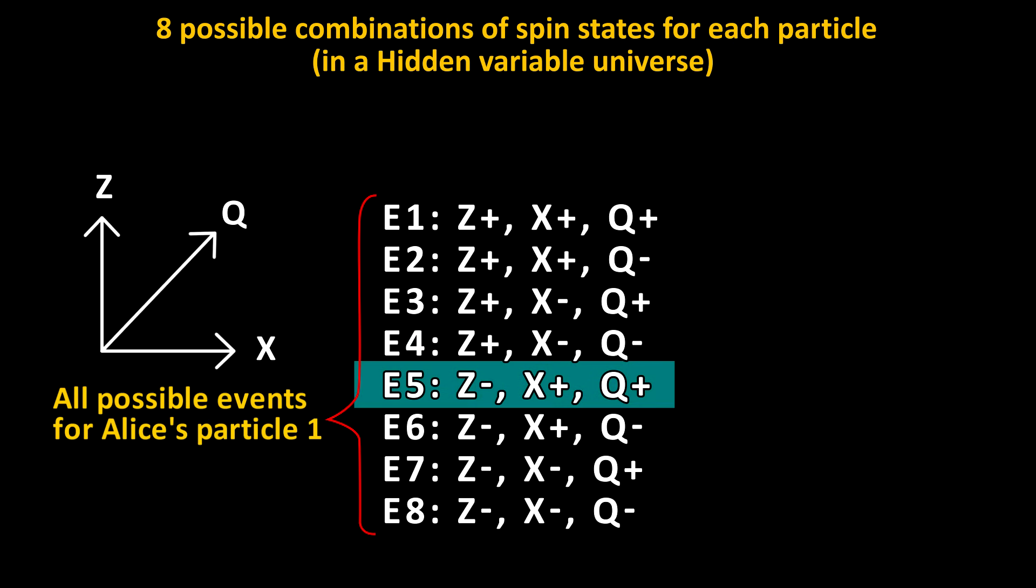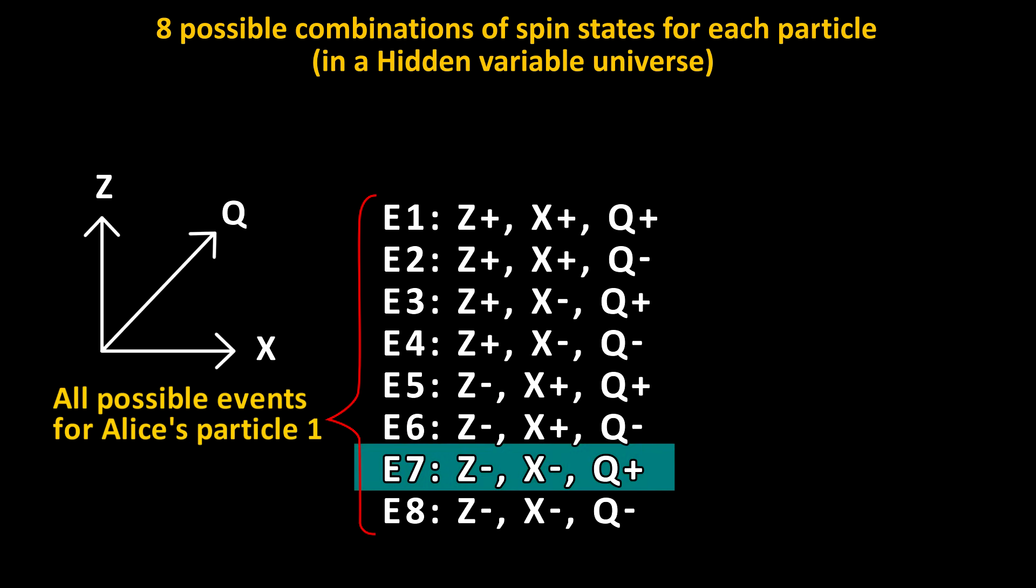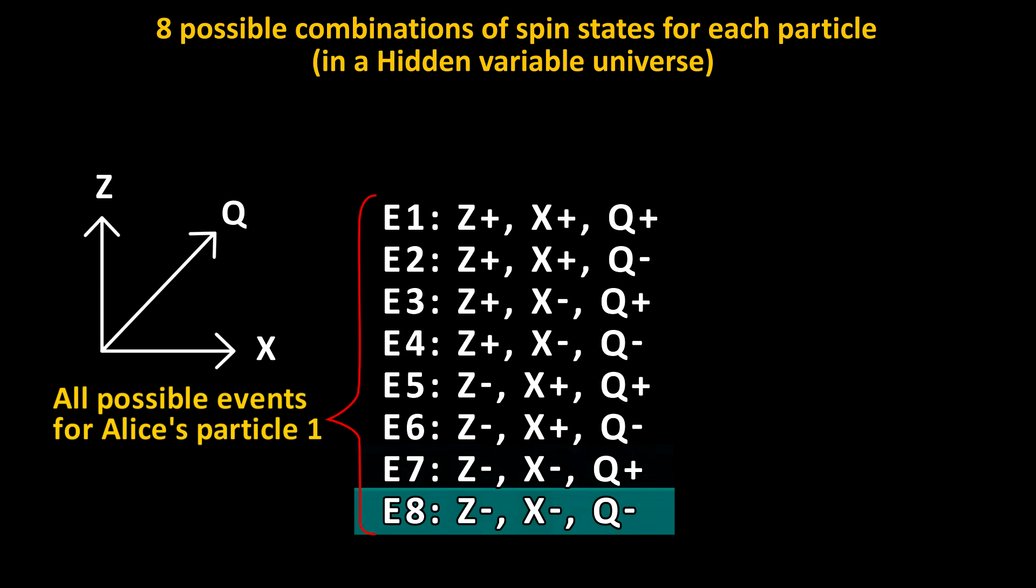E5 is when z is negative, x is positive, and q is positive. E6, z is negative, x is positive, q is negative. E7, z is negative, x is negative, and q is positive. E8, z is negative, x is negative, and q is negative.